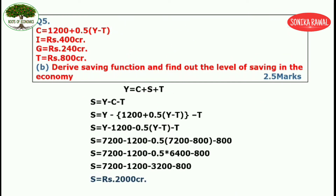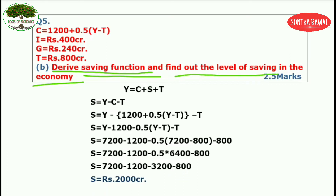Moving further to part B. Part B says derive the saving function and find out the level of saving in the economy. We know that in a three sector economy model, Y equals C plus S plus T. In a two sector model, Y equals C plus S, but in the three sector model, Y equals C plus S plus T. We need to find S, so bring S to the left-hand side.